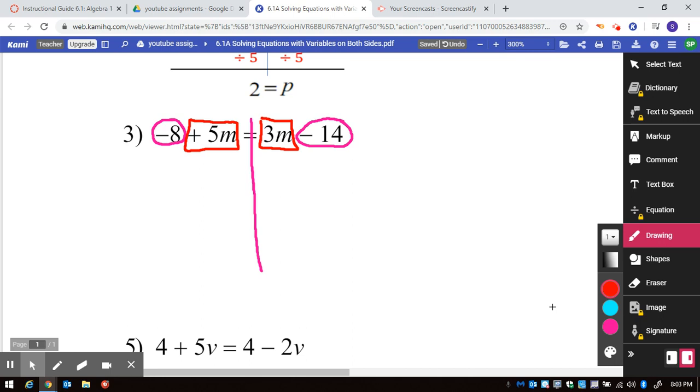I like to identify the variables first and I can see I want to take the smallest one over to the largest one. Sometimes that helps avoiding dividing by a negative number in the end. So, if I do this, 3M minus 3M, well, that's 0. I don't have to write the 0 down below, but now 5M minus 3M is 2M.